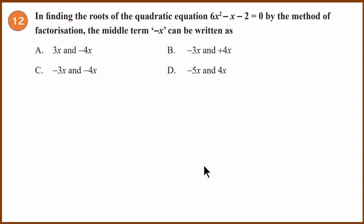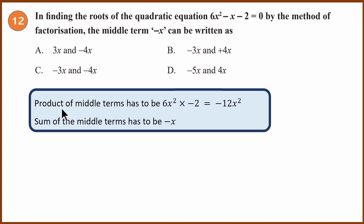Twelfth question: in finding the roots of 6x² − x − 2 = 0 by factorization, how can the middle term −x be split? When splitting the middle term, the product of the two parts must equal 6x² × (−2) = −12x², and their sum must equal −x. Checking options: option A gives product −12x² and sum −x. The answer is A.